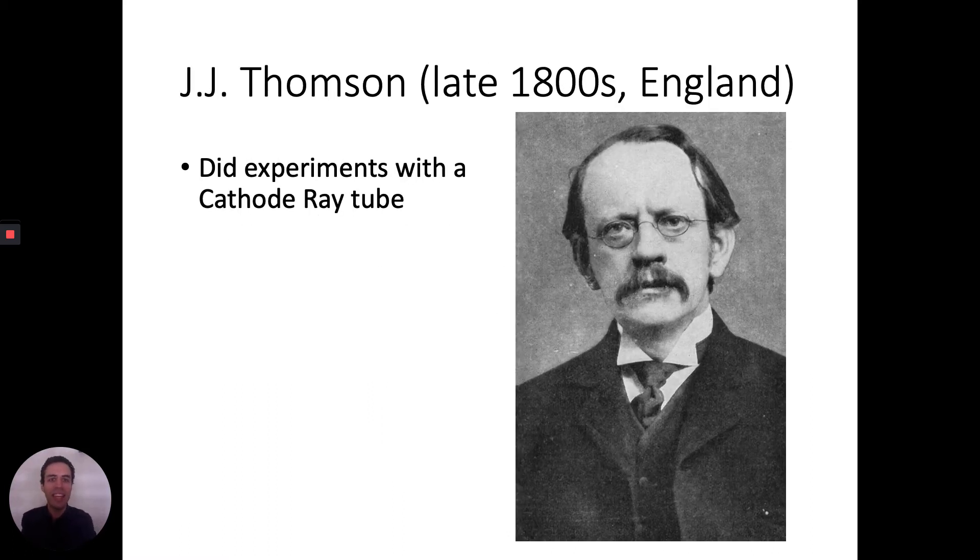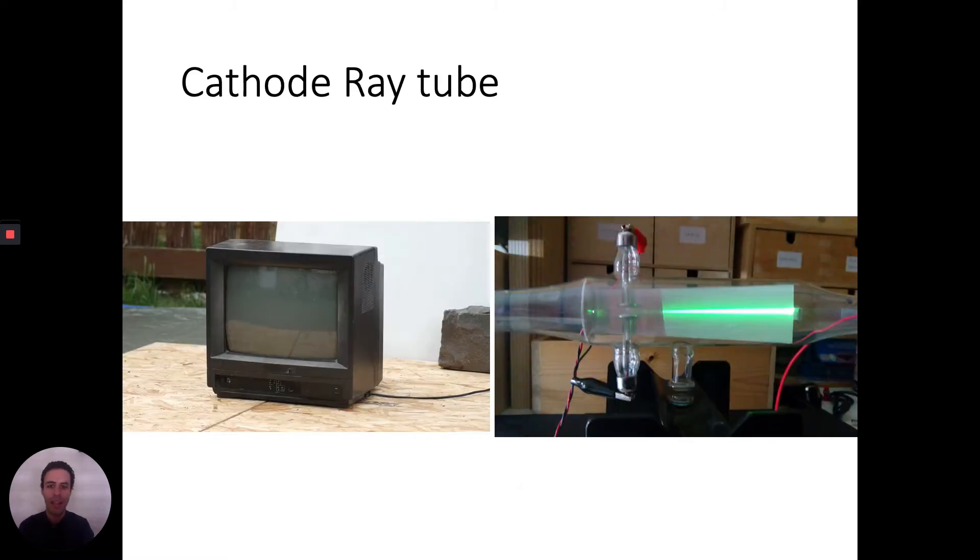Then in the late 1800s, J.J. Thomson, who lived in England, started to do some experiments with a cathode ray tube. This was a pretty popular tool to experiment with at the time. If you've ever seen a TV that is not a flat screen, like the one on the left, these are called CRTs, cathode ray tubes. So the technology behind this television is the same technology that J.J. Thomson was experimenting with in England in the late 1800s. Here's what it looks like on the right.